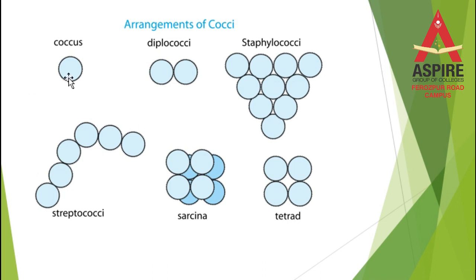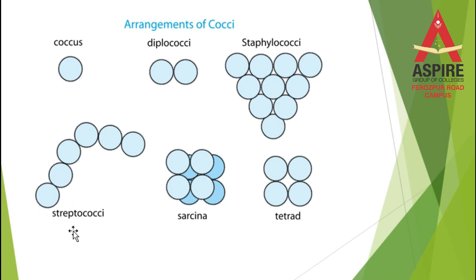To summarize: a single oval-shaped bacterium is called a coccus; two together form a diplococcus; and when they are arranged in a chain form, they are called streptococcus or streptococci.